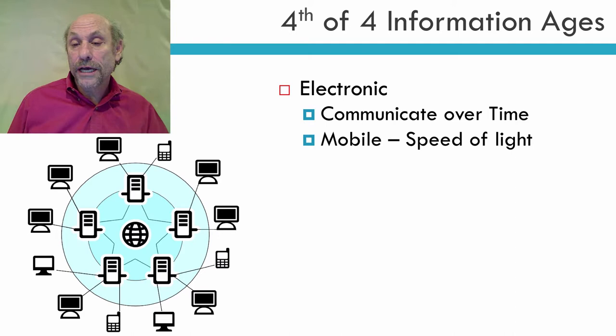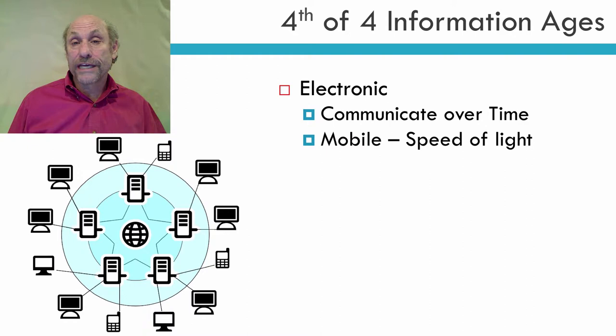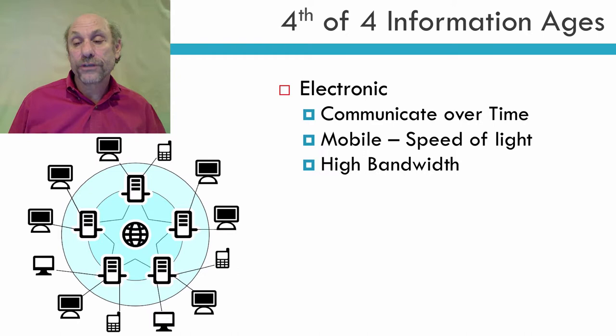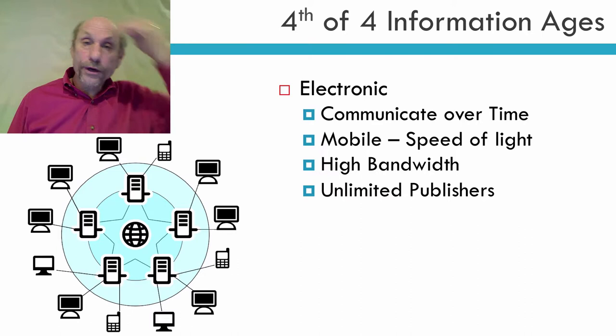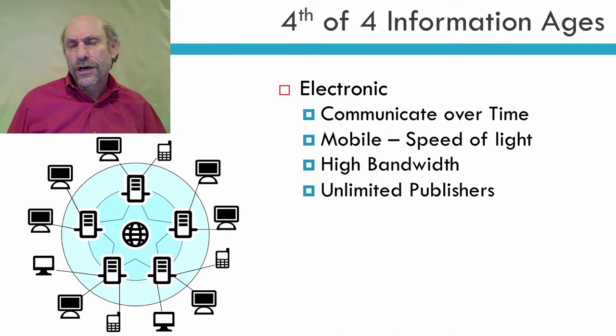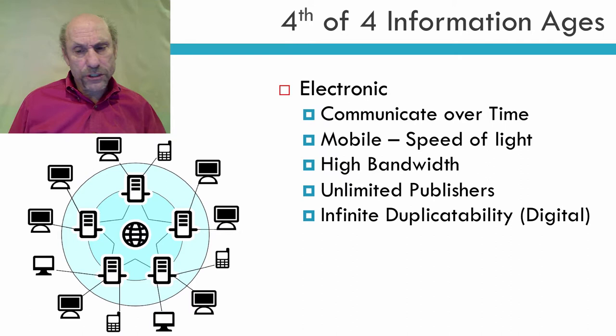The fourth information age I call the electronic age. Again, you can still communicate over time — I'm putting together this video and you can watch it at some later time. But it's much more mobile now; I'm able to send this out at the speed of light. Very high bandwidth — we have a lot more information that we can present in any given amount of time. And here's an important point: essentially, you have an unlimited number of publishers. I am a publisher; everybody on the internet can be a publisher. So now, if the government or the community wants to control publishing, it's going to be much more difficult.